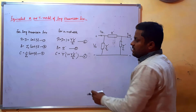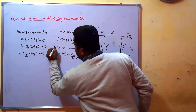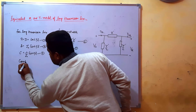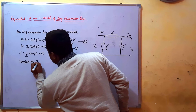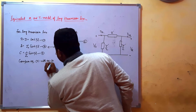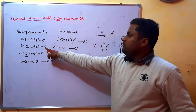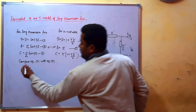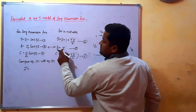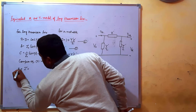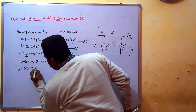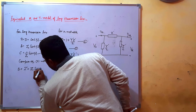Now compare these equations. Compare equation 2 with equation 4 (B for long line). From here we can easily see that Z' equals B, which is equal to Z₀ sinh(γL).